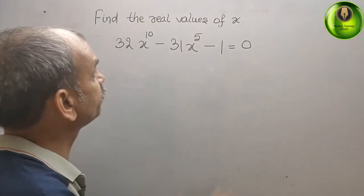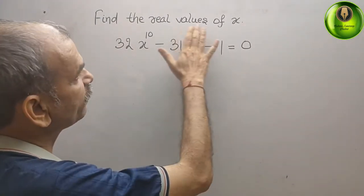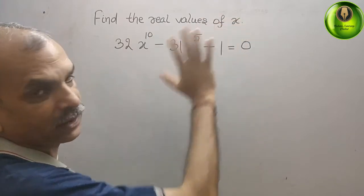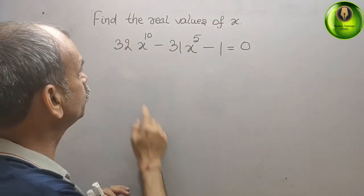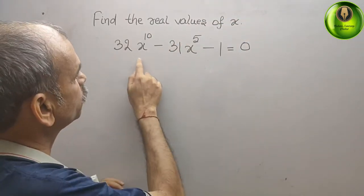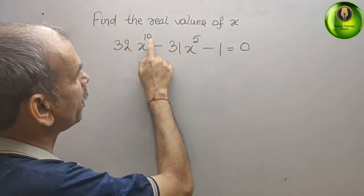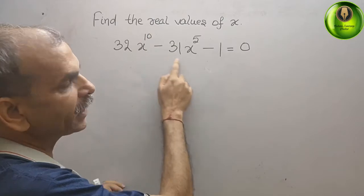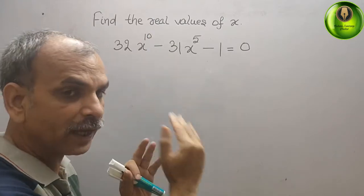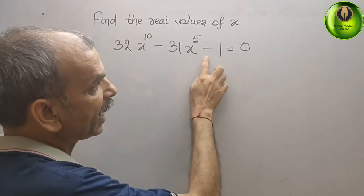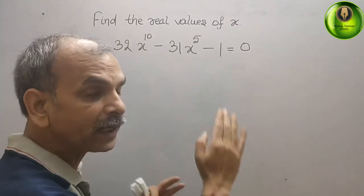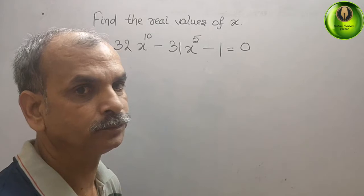Your question is: find the real values of x. They have given you 32x to the power of 10, minus 31x to the power of 5, minus 1, that gives you 0.